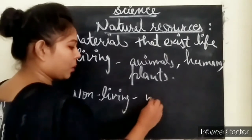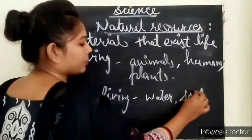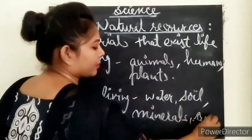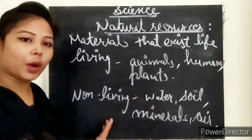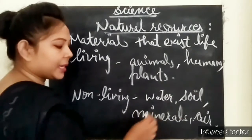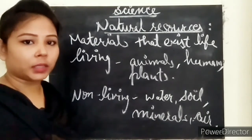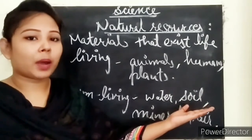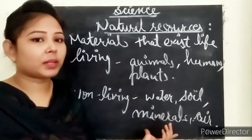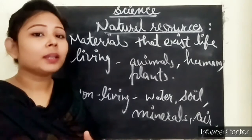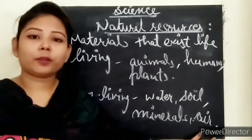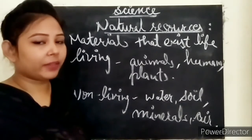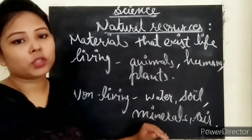Non-living resources include water, soil, and minerals. All of these are essential for surviving on the earth. For example, we cannot live without water; without soil there would be fewer plants; without minerals and ores we have less quantity of them; and without air we would not be able to breathe. We cannot survive without these non-living resources.